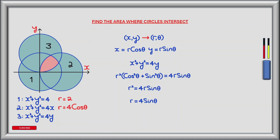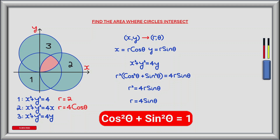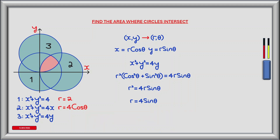For circle 3 we have the equation x squared plus y squared equals 4y. Making the substitution for x and y gives r squared times the bracket of cos squared theta plus sin squared theta equals 4r sin theta. Using the trig identity, cos squared theta plus sin squared theta equals 1, we're left with r squared equals 4r sin theta. Dividing both sides by r we get r equals 4 sin theta.